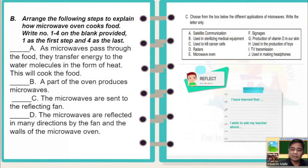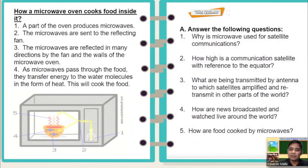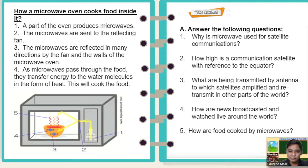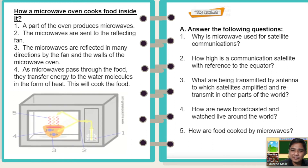What have you learned? Answer the following questions. One: why is microwave used for satellite communications? Two: how high is a communications satellite with reference to the equator? Three: what are being transmitted by antennas to which satellites amplify and retransmit to other parts of the world? Four: how are news broadcasts watched live around the world? Five: how is food cooked by microwaves? I am very sure that you can answer these five questions.